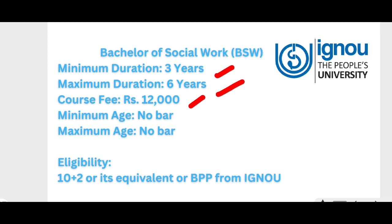Apart from Delhi University, there are many private and semi-private universities which also provide Bachelor in Social Work — such as Lucknow University, St. Stephen's, and St. Xavier's, among others. Many private universities have Bachelor in Social Work programs available. However, some institutions now only offer Master's level social work programs.